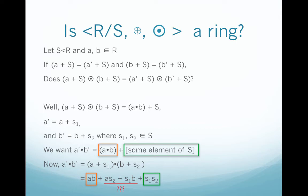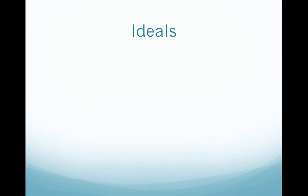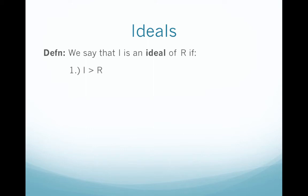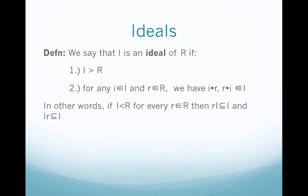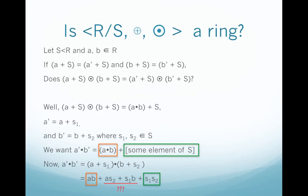So we need S to have some additional property to guarantee that these two middle terms end up in S, and that leads us to the term of an ideal. We say that I is an ideal of R if I is a subring of R, and if we can take any element in I and any element in R, multiply them, and get something in I. More formally, if I is a subring of R, then for every r in R, we have rI ⊆ I and Ir ⊆ I.